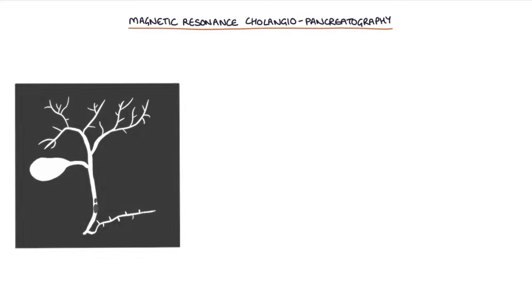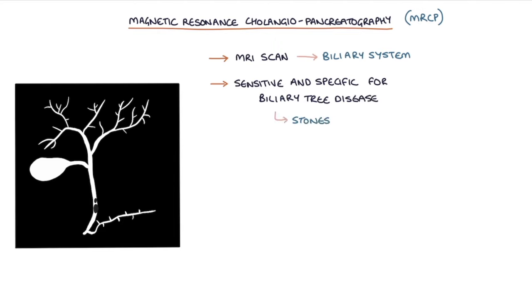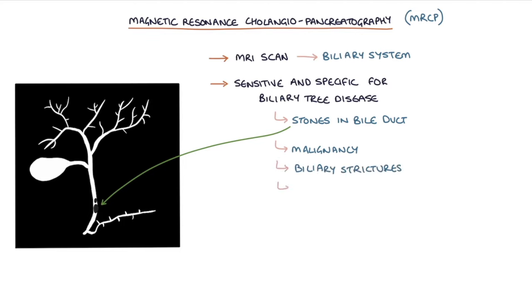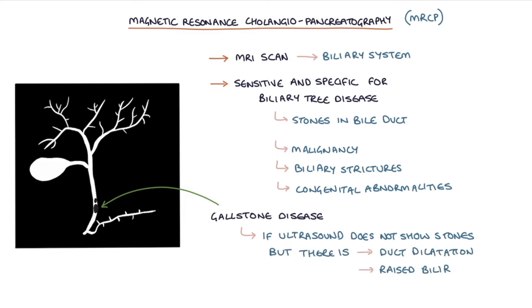Let's talk about magnetic resonance cholangiopancreatography. An MRCP is an MRI scan with a specific protocol that produces a detailed image of the biliary system. This is a very sensitive and specific test for biliary tree disease, such as stones in the bile duct and malignancy. An MRCP scan is used in a number of scenarios for gaining a detailed picture of the biliary system, such as identifying biliary strictures or congenital abnormalities. With gallstone disease, MRCP is typically used to investigate further if the ultrasound scan does not show stones in the bile duct but there is bile duct dilatation or raised bilirubin, suggesting obstruction. The MRCP scan will give a detailed view showing where the obstruction is.